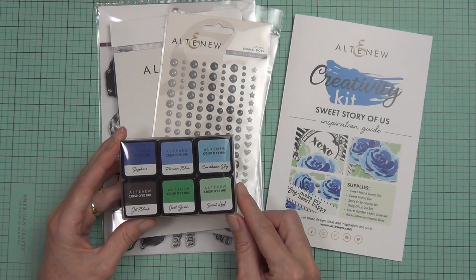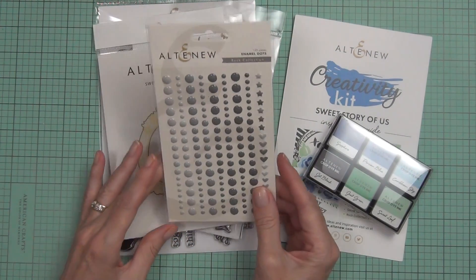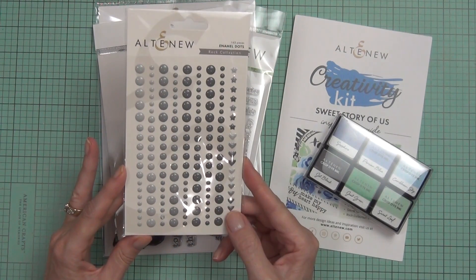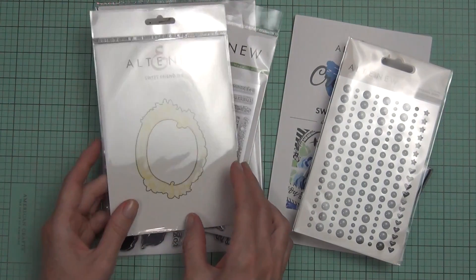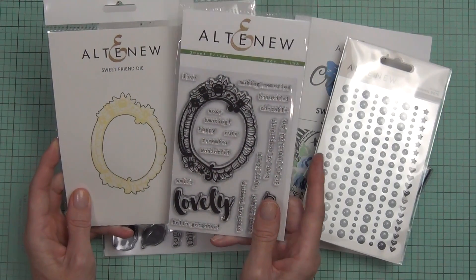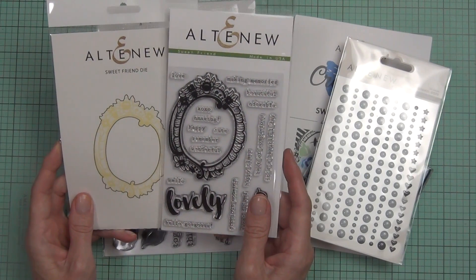I'm just going to quickly walk you through what's included. You get six mini cubes of ink from the Rock Collection, and enamel dots—my favorite ones.